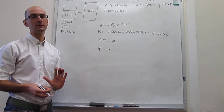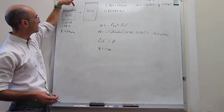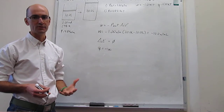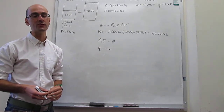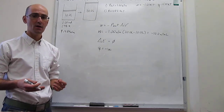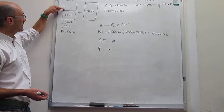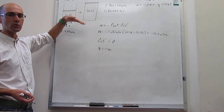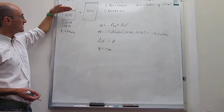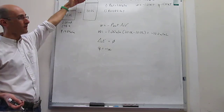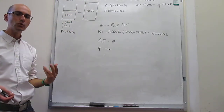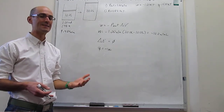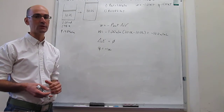Now we're going to repeat this expansion but do it differently. Instead of a constant external pressure of one atmosphere pushing down on that piston, we're going to do this reversibly. This is an idealized process that can never happen in nature because it will take an infinite amount of time. The way to do this is to place an infinite number of infinitesimal masses and remove one at a time while letting the system equilibrate in between. This guarantees maximum work because at any point during the expansion, the external pressure is as large as it possibly can be.